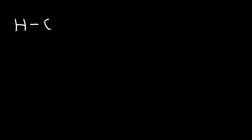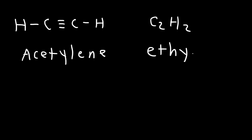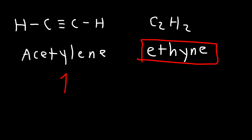In this video we're going to focus on naming alkynes. Let's begin with the common names. This is C2H2 and its common name is acetylene. This is also called ethyne because it's an alkyne, so it ends with the suffix -yne. But the common name is acetylene.